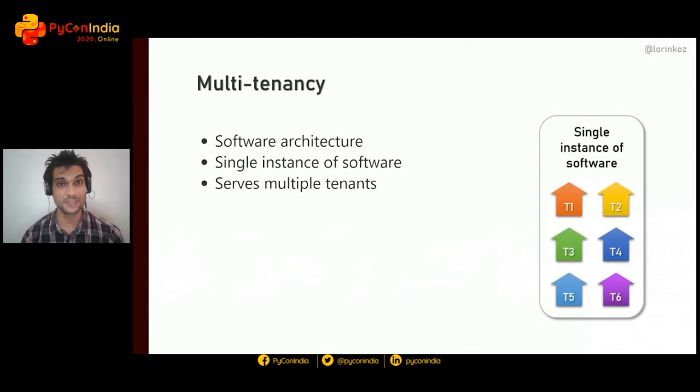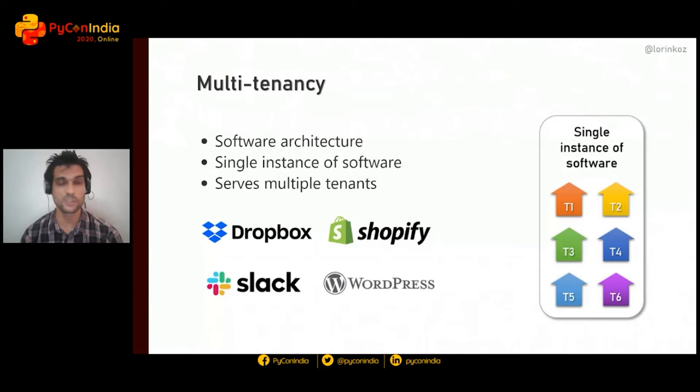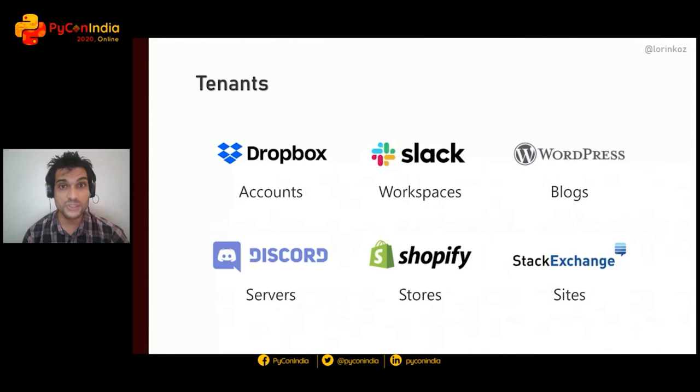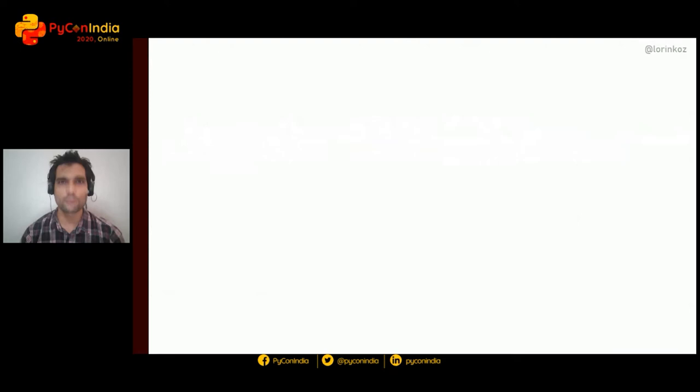Multi-tenancy is the software architecture in which a single instance of software is capable of serving multiple tenants. Examples of businesses implementing multi-tenancy include Dropbox, Shopify, Slack, and WordPress. Tenants are isolated spaces in which users with specific privileges interact — for example, accounts at Dropbox, workspaces at Slack, blogs at WordPress, servers at Discord, or stores at Shopify.